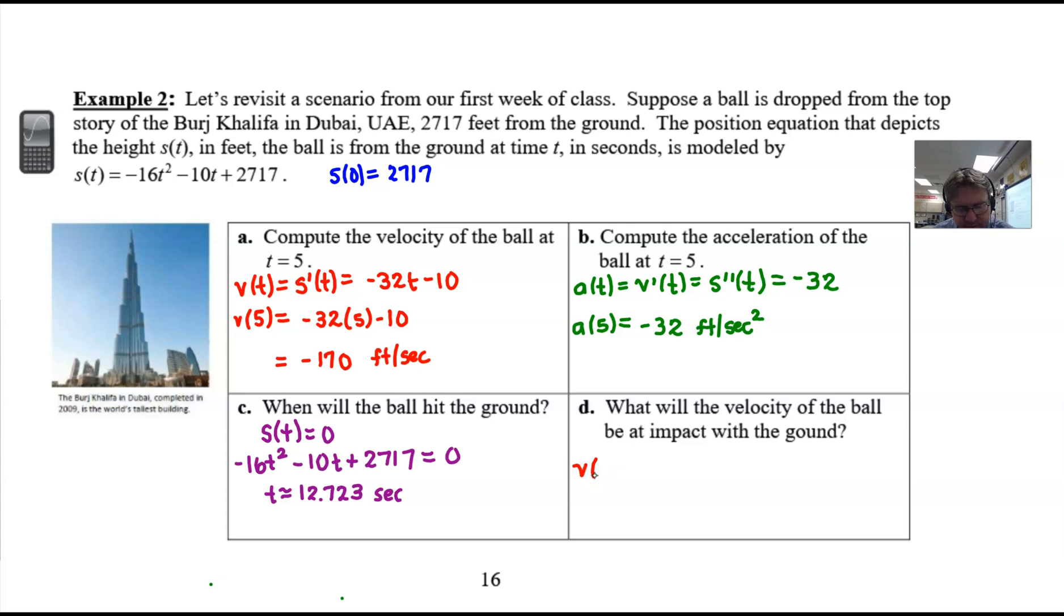I want the velocity at a specific time, and that time would be 12.723. But to do one better than that, how about I use my four decimal place version, 12.7225, to ensure a little bit more accuracy. I'm going to get -32 multiplied by 12.7225, then subtract 10. Let's return to the calculator.